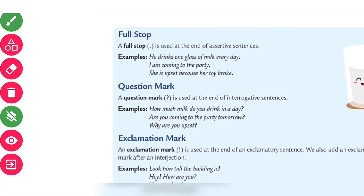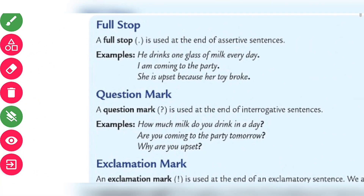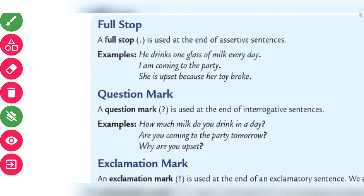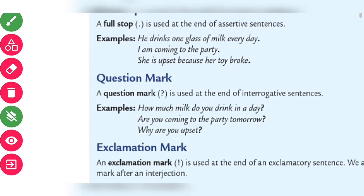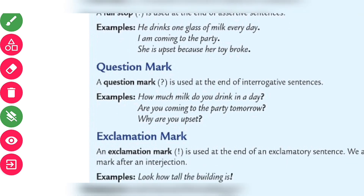Now let's go to the next page. A full stop is used at the end of an assertive sentence. He drinks one glass of milk every day. I'm coming to the party. She's upset because her toy broke. That is a full stop that we use at the end of the sentence.